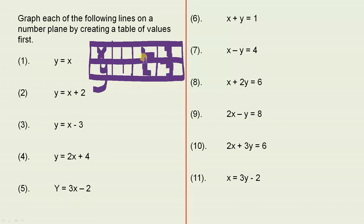So basically, you've got 1, 1, 2, 2, and 3, 3. And they're the three points. And then you plot those points on a number plane and then you draw the line.